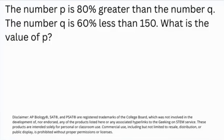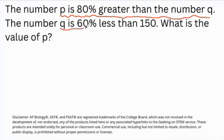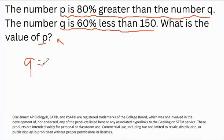One of the trends we've noted for the digital SAT — which we believe will also cover the PSAT — is the concept of having a topic being tested in multiple steps. For example, this looks like a percentage-based problem, specifically percentage increase or decrease. It says P is 80% greater than Q, and Q is 60% less than 150. They want you to find the value of P, but instead you're expected to do two parts because you have to work backwards.